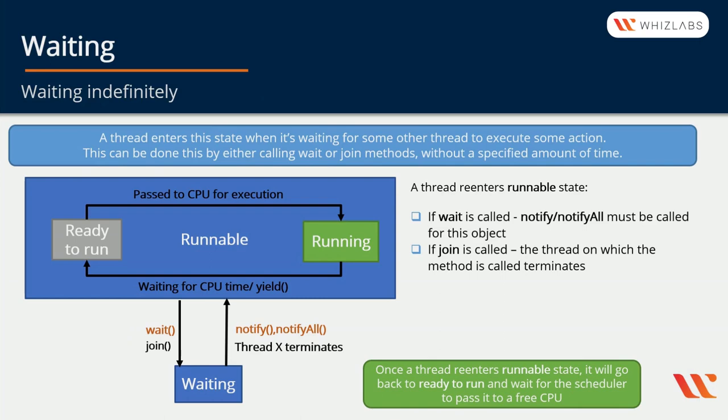Then we have the Waiting state. A thread enters this state when it's waiting for some other thread to execute some action. This can be done by calling wait or join method without a specified amount of time. Since we can go into Waiting state in two ways, there are two ways to re-enter Runnable: if wait is called, notify or notifyAll must be called for this object; or if join is called, the thread on which the method is called should terminate. Once the thread re-enters Runnable, it will be waiting for CPU time.